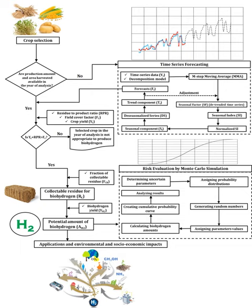Sometimes the trend and cyclical components are grouped into one called the trend-cycle component. The trend-cycle component can just be referred to as the trend component even though it may contain cyclical behavior. For example, a seasonal decomposition of time series by Loess plots decomposes a time series into seasonal, trend and irregular components using Loess, and plots the components separately, whereby the cyclical component if present in the data is included in the trend component plot.